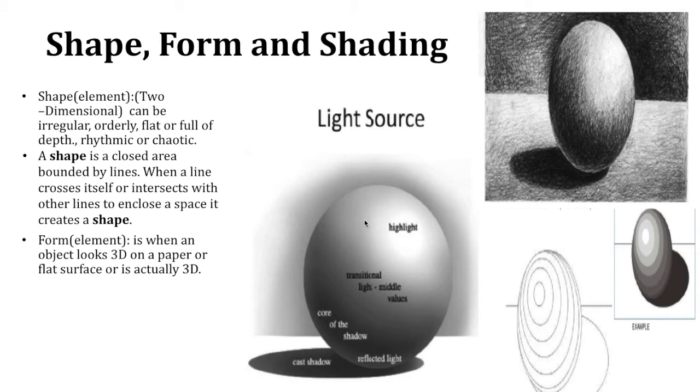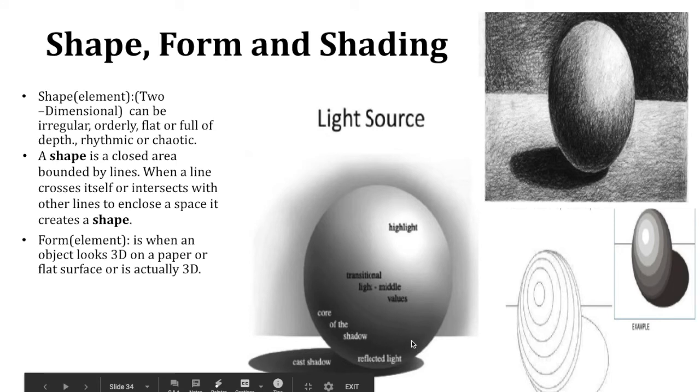I want you to have the transitional and mid tones here, which are these mid, not too dark grays, but not too light grays. And then we have the core of the shadow, which is super dark. It's the darkest part. And then we have this bottom reflected light, which you cannot forget about.